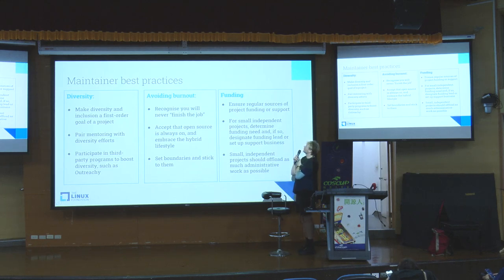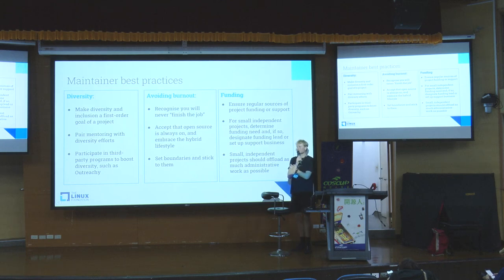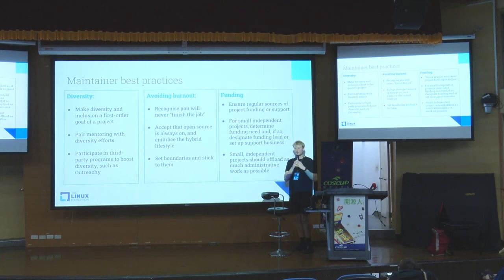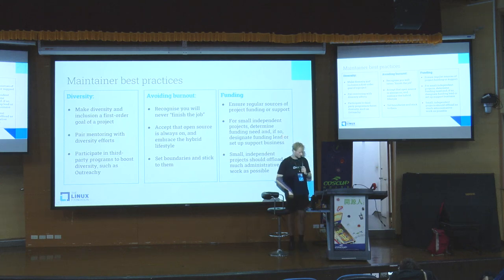The final category is funding. The funding situation differs for different types of projects — from small independent projects with five contributors to something like PyTorch, which was developed by Meta and is now part of the Linux Foundation with about 3,000 core contributors and around 30,000 in the overall community. The funding situation and needs vary considerably between projects, and there are various recommendations for maintainers depending on their context.